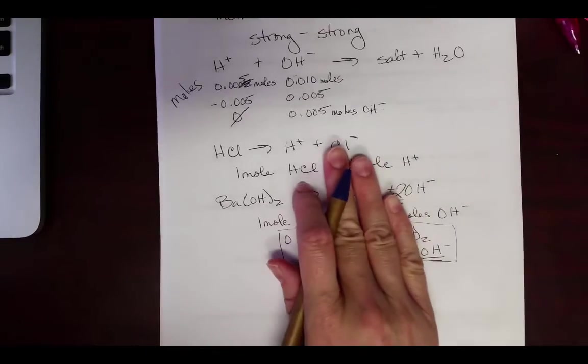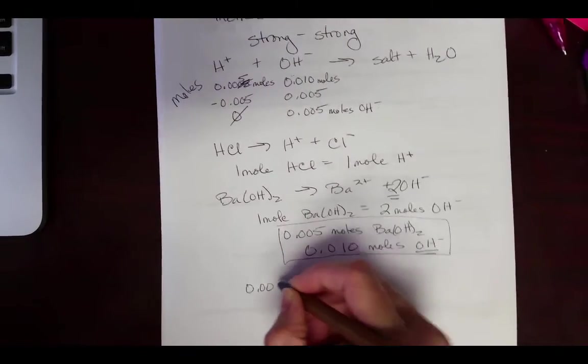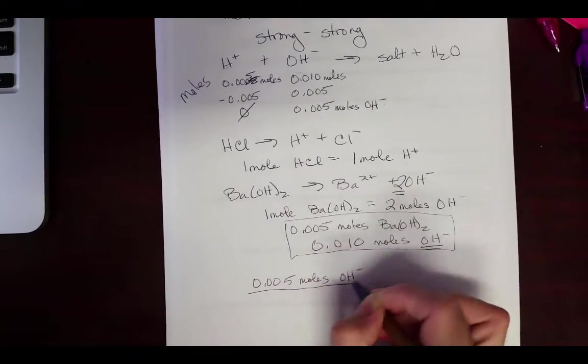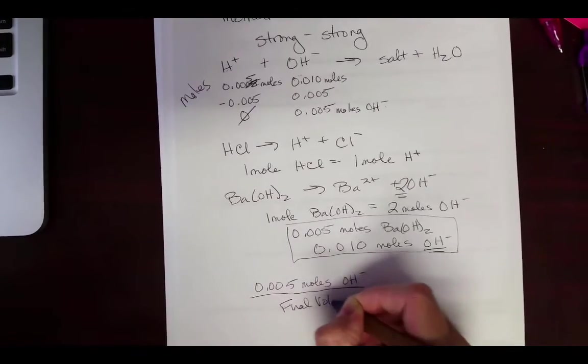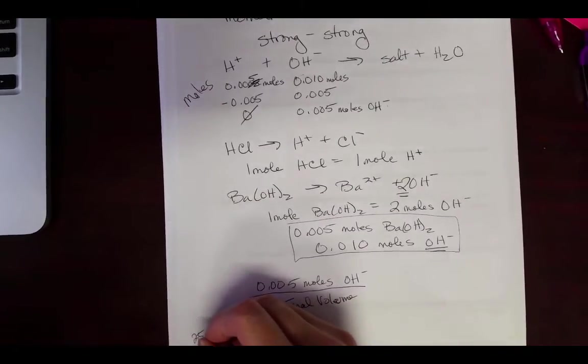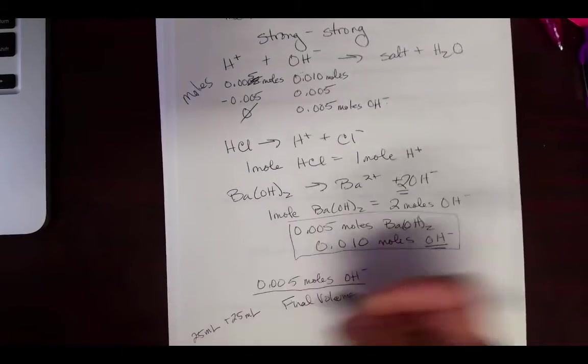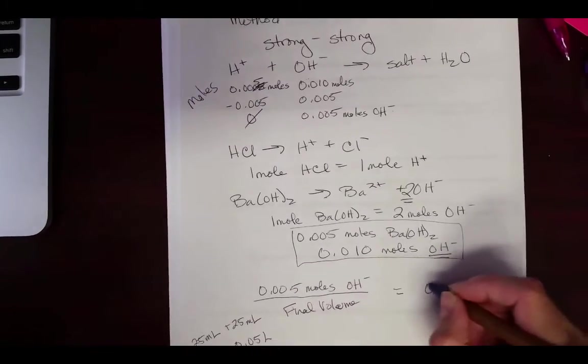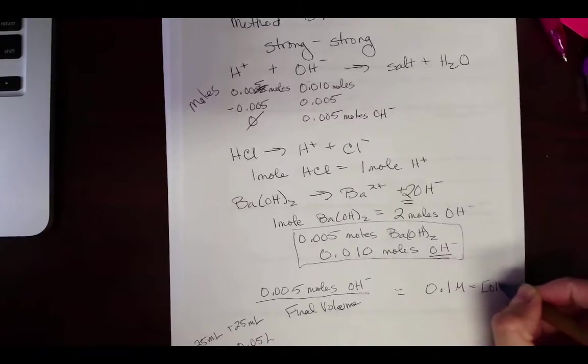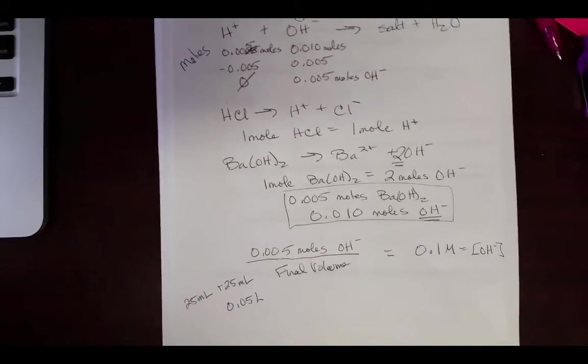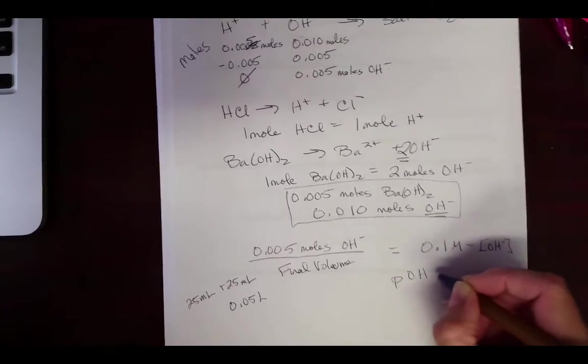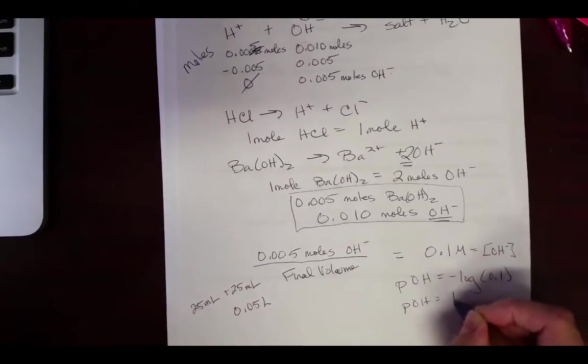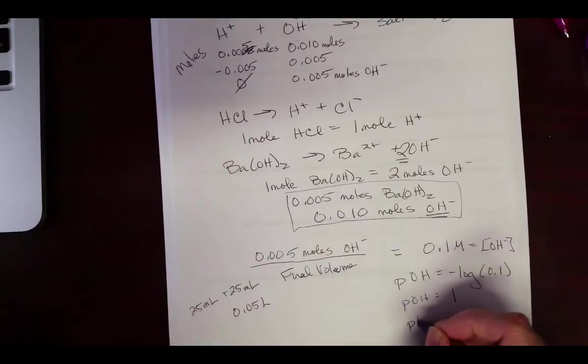So now that we have our moles of hydroxide, the question actually asked us originally for pH. So if I'm going to ask for pH, I'm going to need my final volume. So that's going to be 25 milliliters plus 25 milliliters. It's going to be 0.05 liters. And by the time I do that, I'm going to get a grand total of 0.1 molar as my hydroxide concentration. To make my life easy, I'll usually just take the pOH of that. So take the negative log of 0.1. My pOH is then 1. So my pH is then 13.